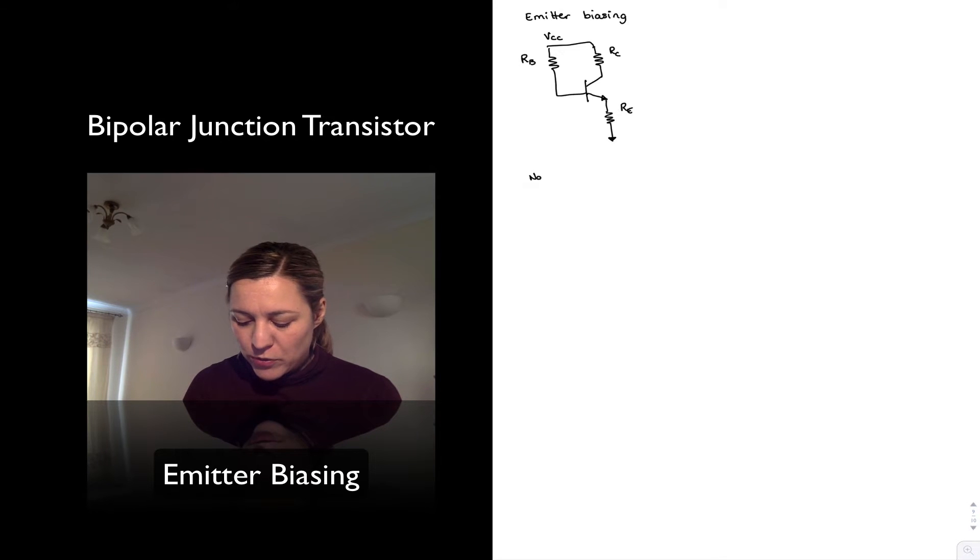My nominal Q point that I want to bias this transistor to is going to be an IC of 1 mA and a VCE of 4.5 volts.